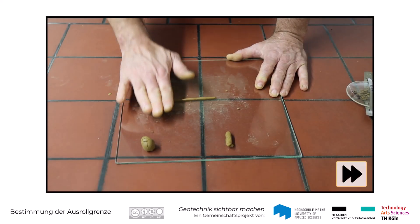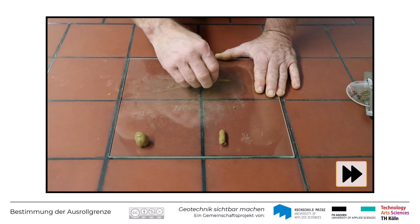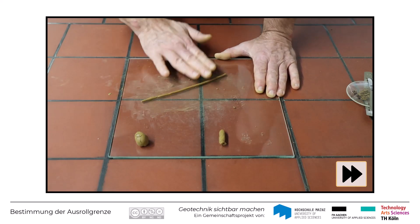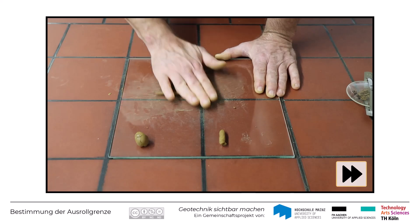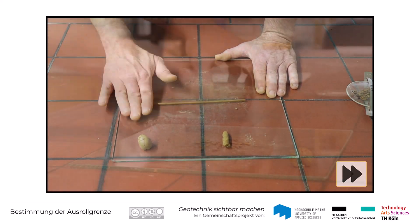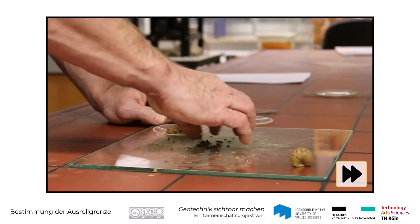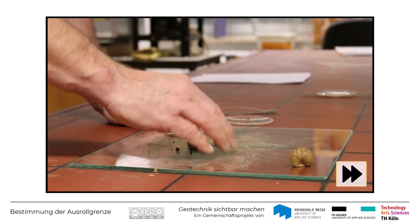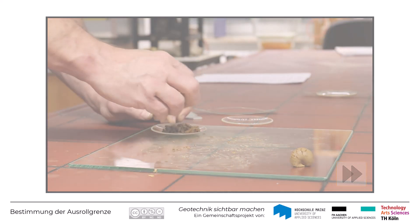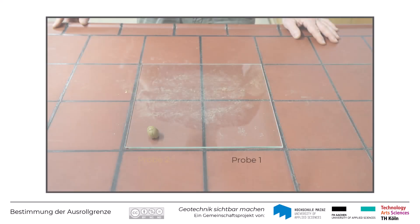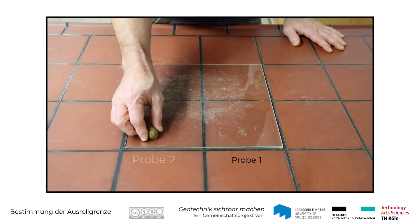Den beschriebenen Vorgang wiederholt man anschließend auch noch mit den beiden weiteren Unterportionen. Die entstehenden Probenstückchen werden dem luftdichten Behälter hinzugefügt, um daran den Wassergehalt zu bestimmen. Mit der zweiten Teilprobe wird komplett analog verfahren.